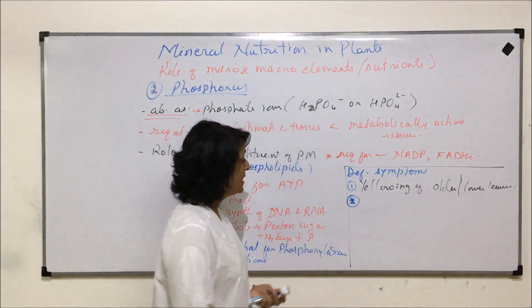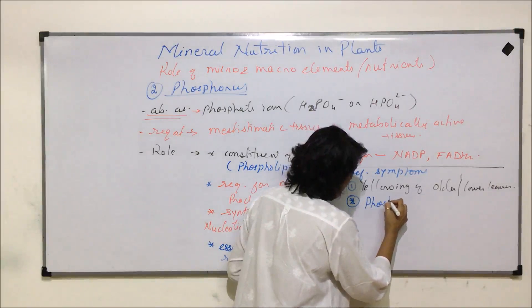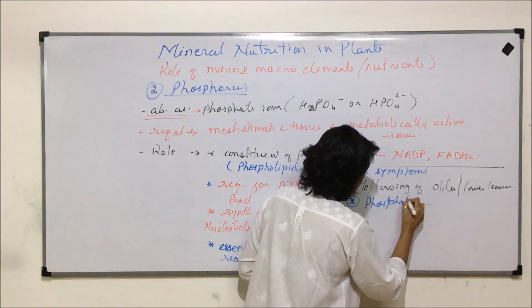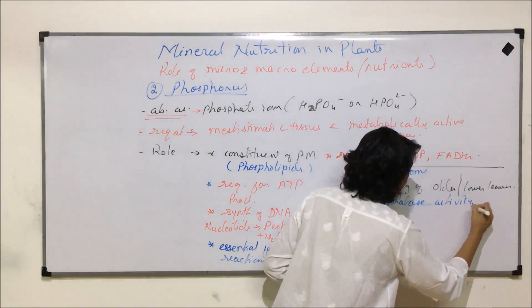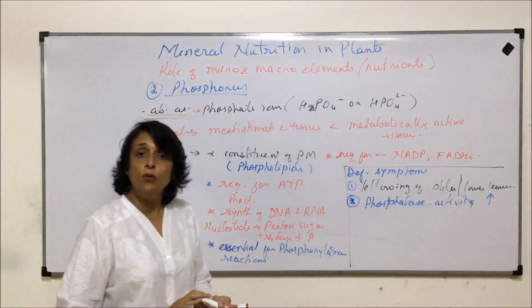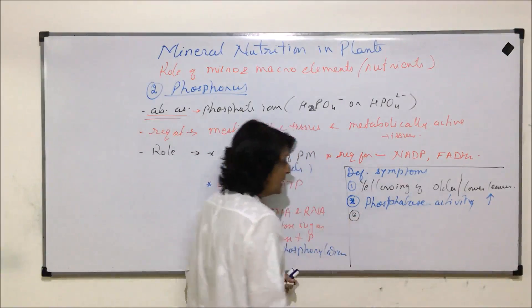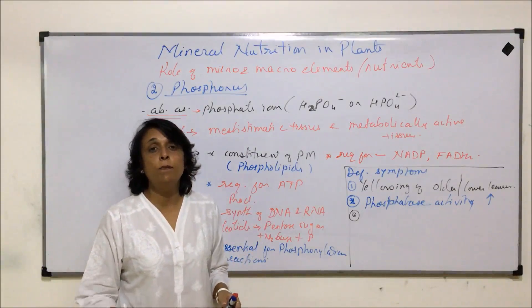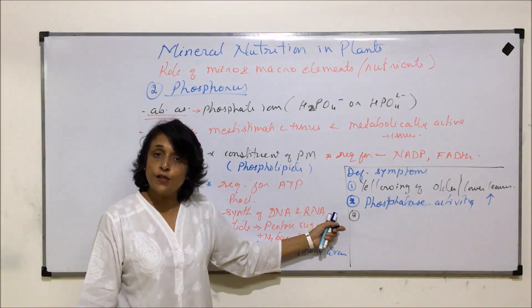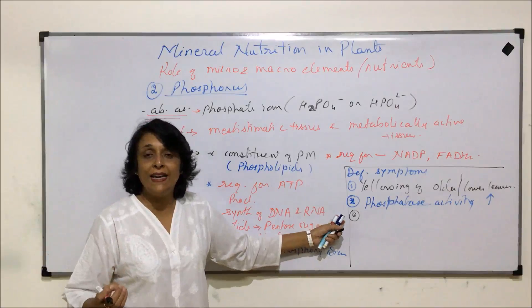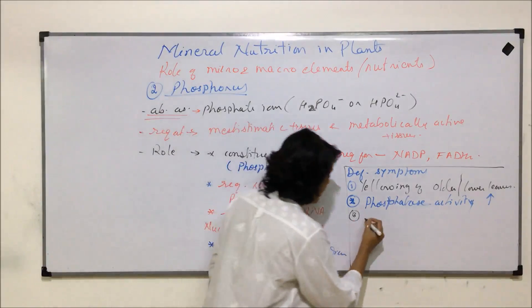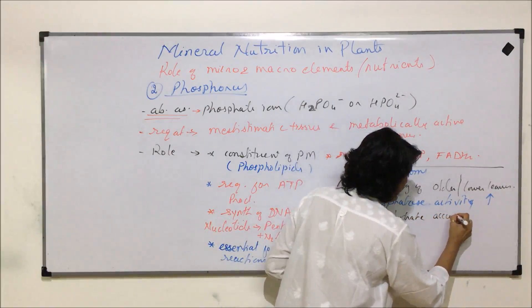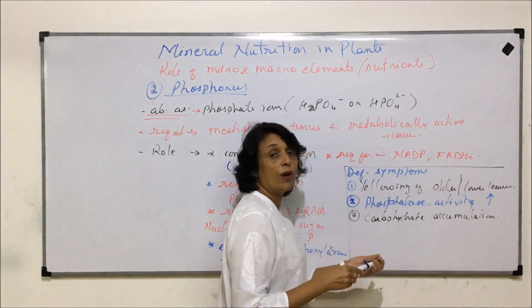The second deficiency symptom is that the activity of phosphatase enzyme is increased, meaning breakdown reactions take place more. Another important and peculiar symptom is that in soybean, normally protein is accumulated, but if there is phosphorus deficiency, carbohydrates get accumulated instead.